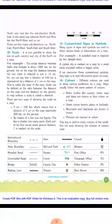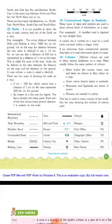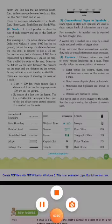Between North and East lies the sub-direction North East. In the same way, between North and West lies North West. There are four major sub-directions: North East, North West, South East, and South West.